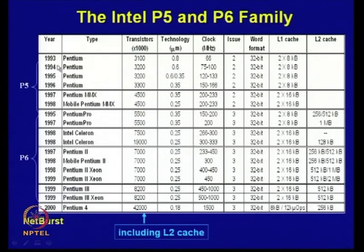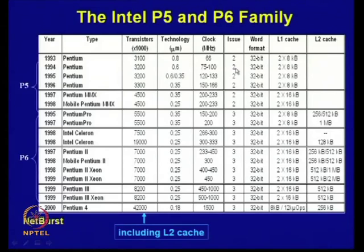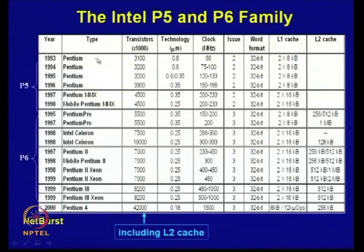The Pentium series from 1993 to 1996 had clock frequencies in the range of 66 MHz to 166 MHz. As mentioned, it used superscalar — two-issue processing, two instructions issued per cycle, word size 32-bit, and L1 cache restricted to 2×8 kilobytes (one for instructions, one for data). There was no L2 cache in the original Pentium processors.